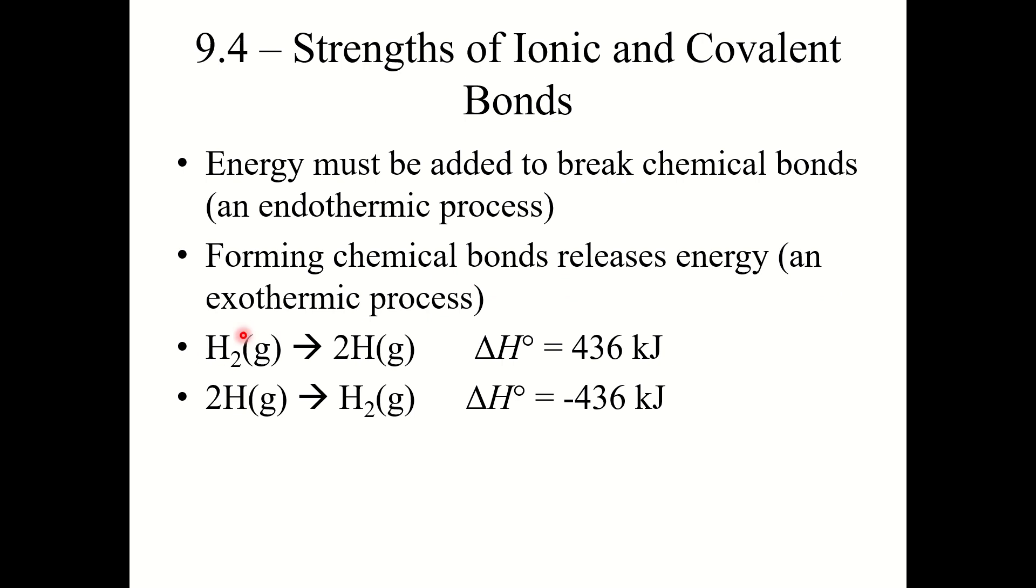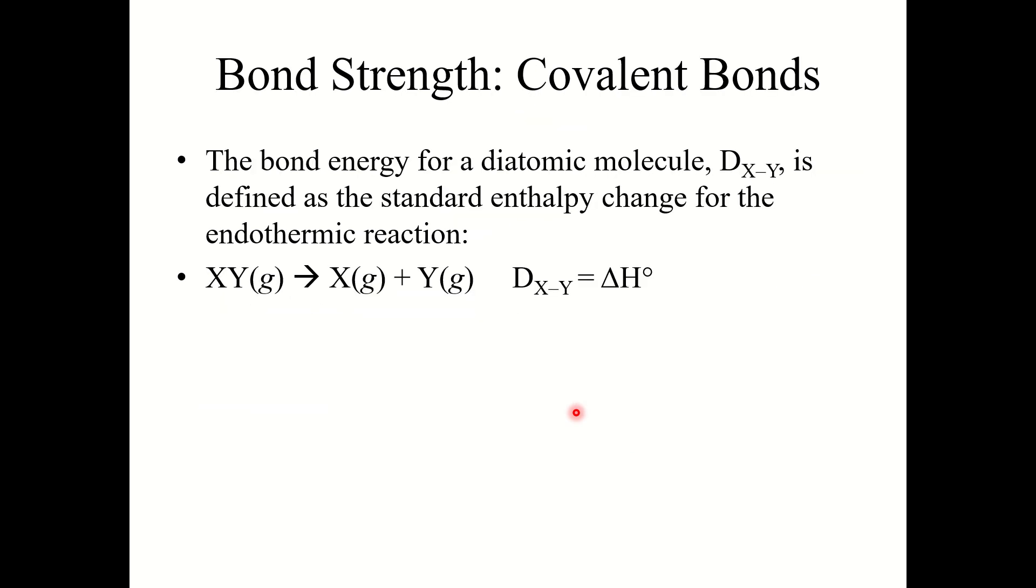For example, if we were to take hydrogen gas and break it apart into two individual hydrogen atoms, this is an endothermic process that requires the input of 436 kilojoules. Whereas the reverse process, two hydrogen atoms coming together to form an H₂ molecule, this is an exothermic process that gives off 436 kilojoules of energy. So we can use these bond energies to calculate standard enthalpy change.